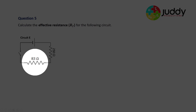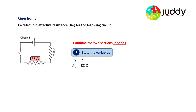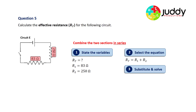Section A in parallel is replaced by a single 83 ohm resistor. Now we have two resistors in series. Stating our variables: RT is the unknown; R1 is 83 ohms and R2 is 250 ohms. Selecting the series equation, we add them together: 83 plus 250 gives us a total and effective resistance of 330 ohms.